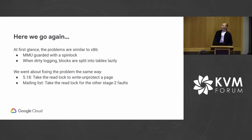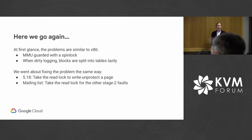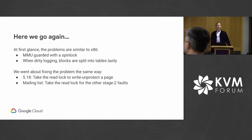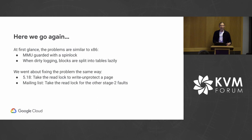When we looked under the hood, we saw a familiar problem. Much like on x86, we saw lock contention on the MMU lock. Initially on ARM, the MMU was protected with a spin lock. When dirty logging is enabled, we actually split pages lazily. Rather than doing an eager page split where we shatter all guest memory down to 4K at the beginning of dirty logging, we're doing it in the vCPU fault path.